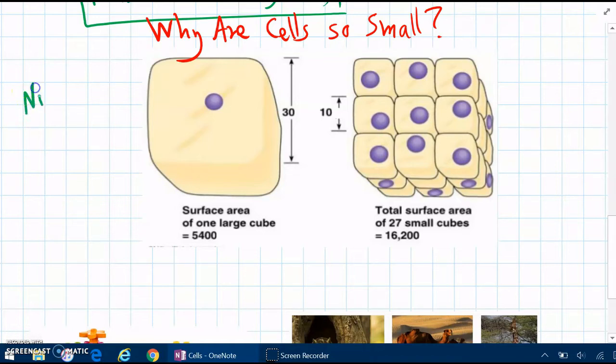So every cell needs to get nutrients from the outside world, and the nutrients have to come in through the outside layer of the cell. To get through into the middle, they need to travel through the liquid and that takes time.